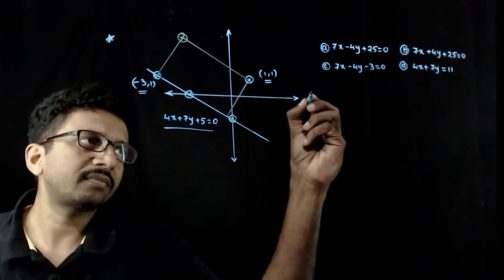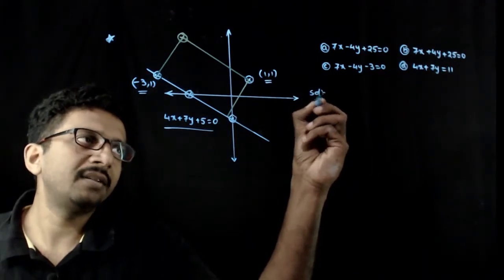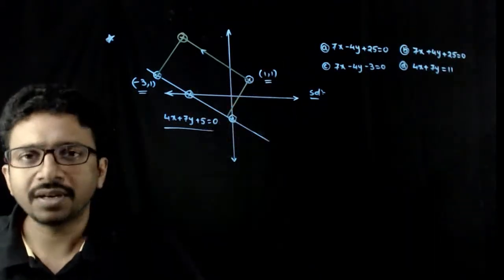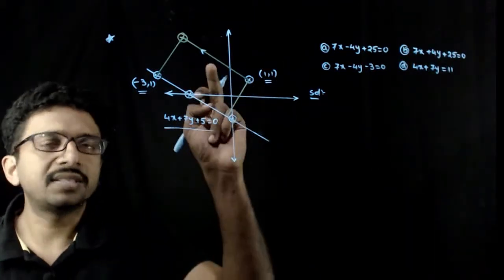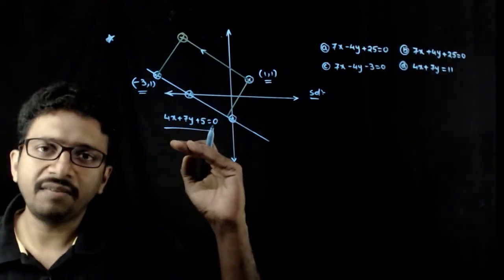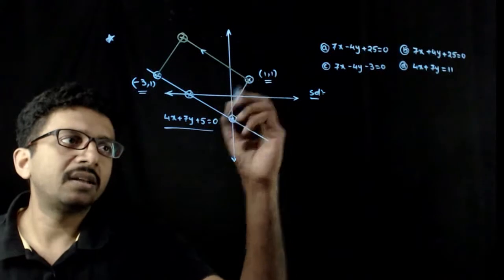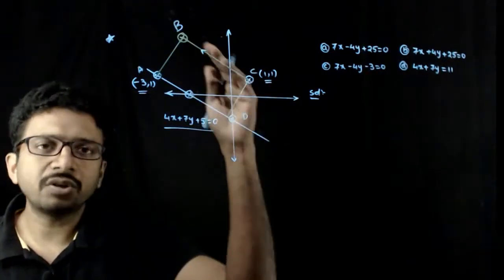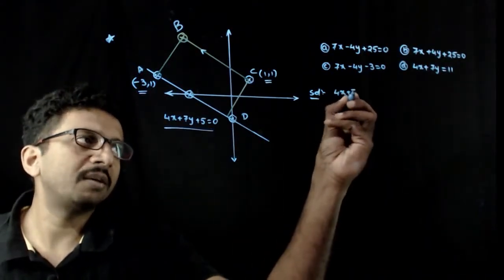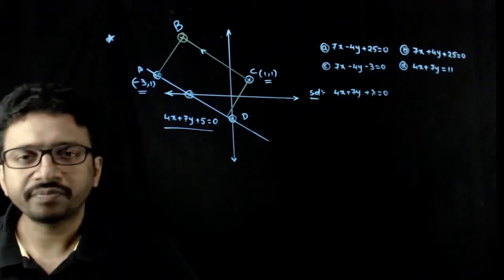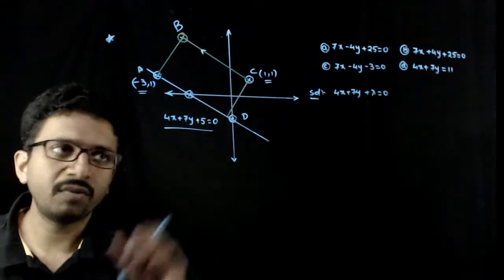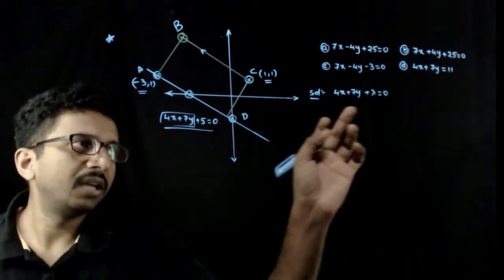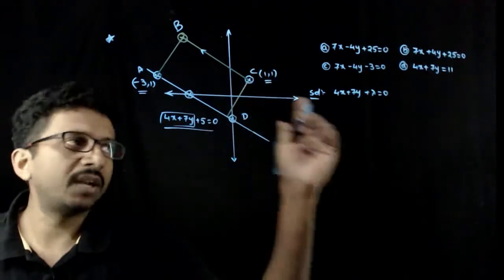It is a multiple option question — you can have more than one answer. Now, this side is parallel to the given line and passing through (1, 1). If I label the rectangle as A, B, C, D, the equation of BC is of the form 4x + 7y + λ = 0, because this is a parallel line — 4x + 7y does not change. This λ should be such that this line passes through (1, 1).